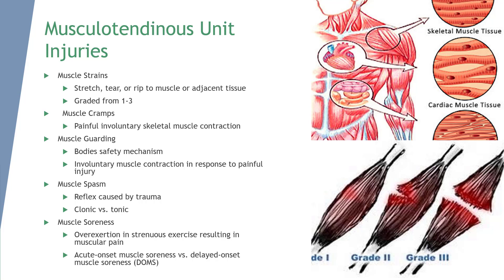Muscle strains occur as a result of a stretch, tear, or rip to the muscle or adjacent tissue. The cause is often obscure, so we don't always know exactly what happened. These injuries can range from minute separation of connective tissue to complete tendon avulsion or muscle rupture.